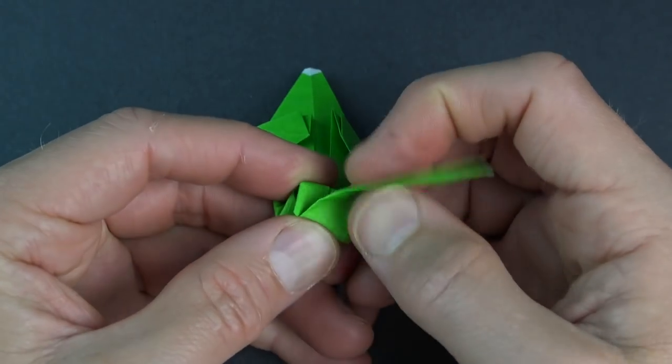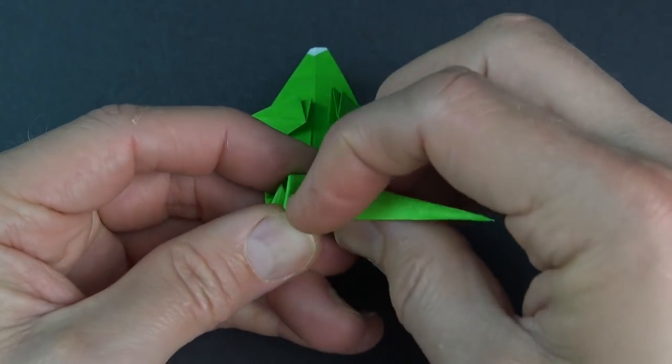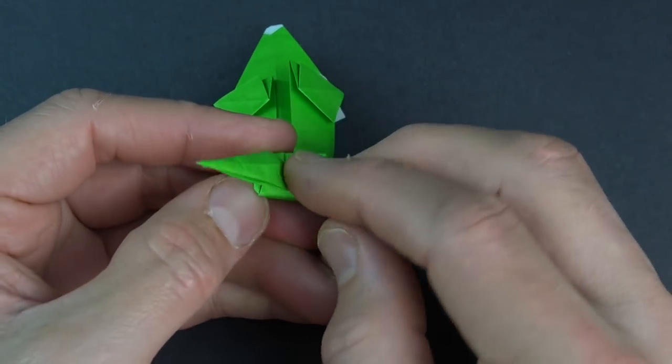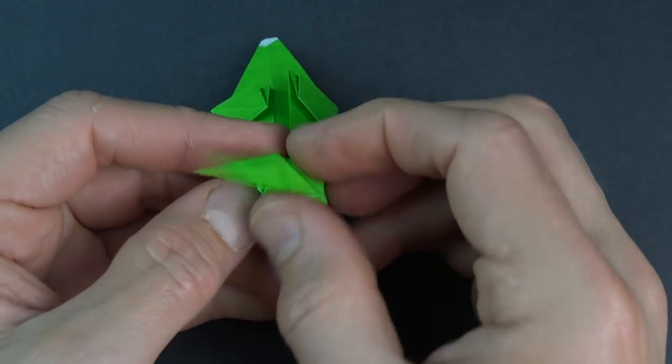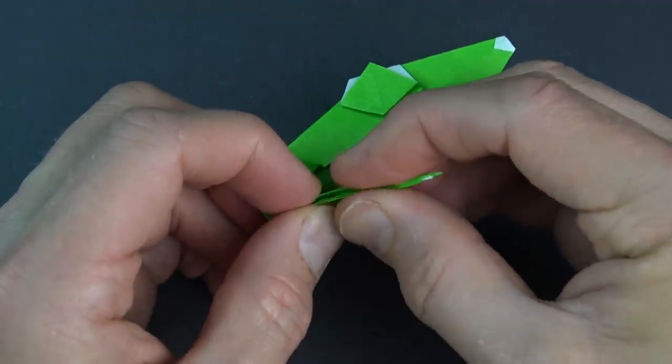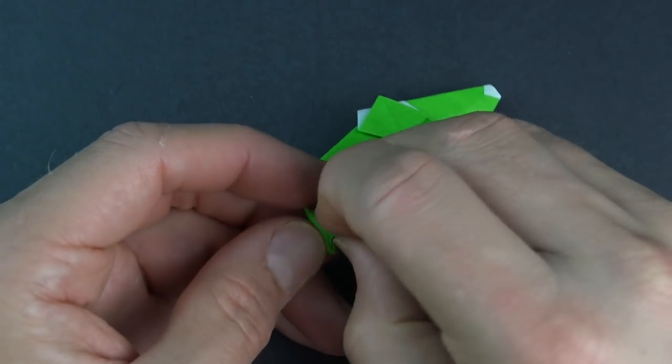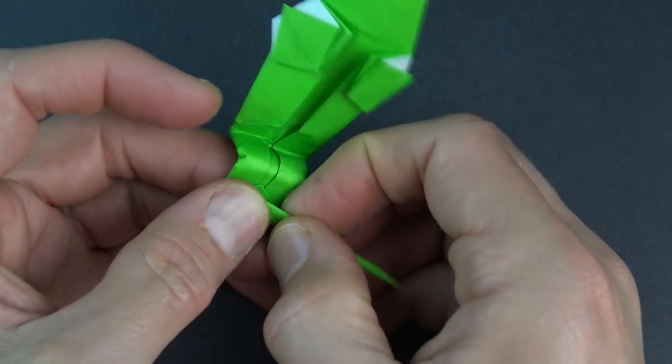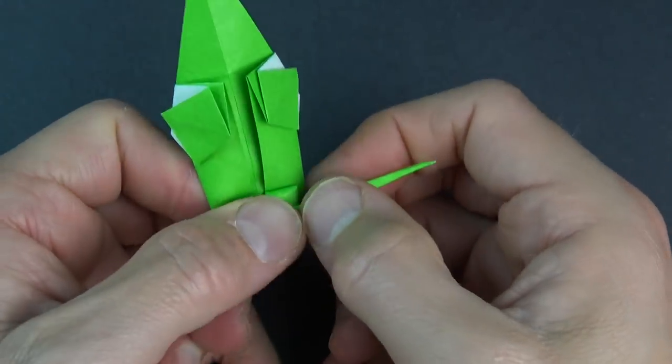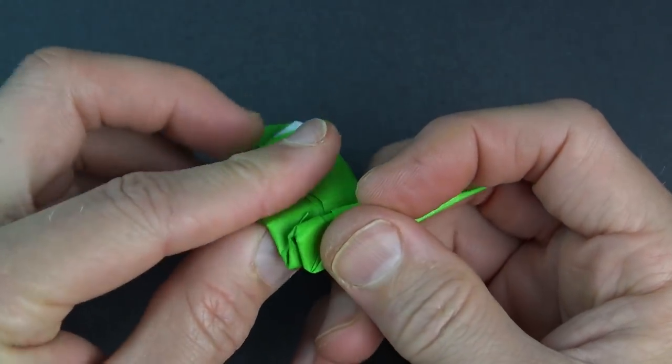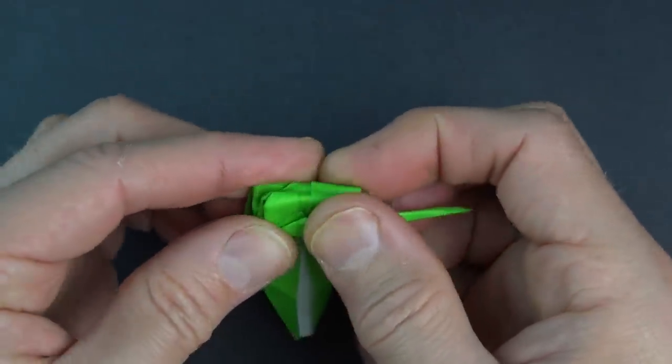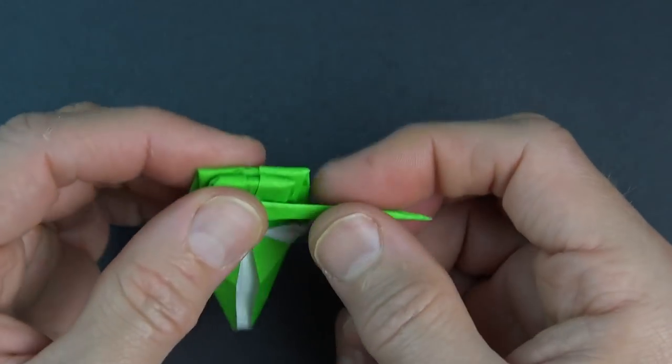And now rabbit ear the mouse tail. So fold to this side, unfold, fold to this side, unfold, and pinch along the length. Pinch, pinch, pinch and fold it to the right and flatten. And now fold this whole flap behind matching it up with this edge.